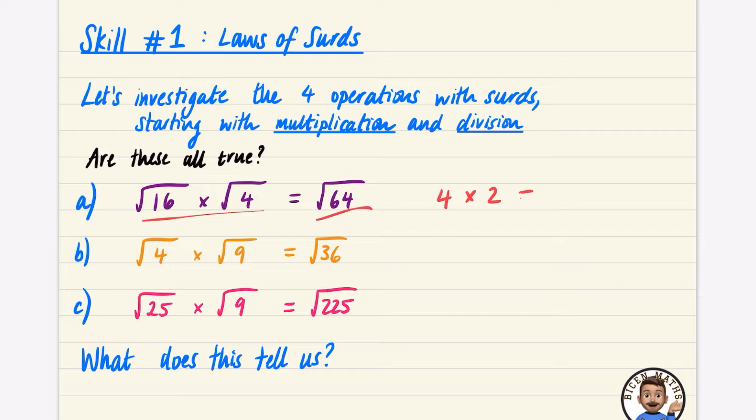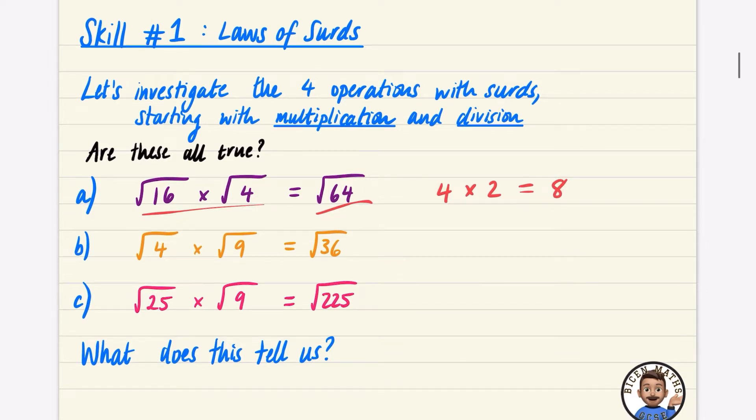The square root of 64 is 8. So 4 times 2 is 8, so this is true, which means this original one here is true as well.